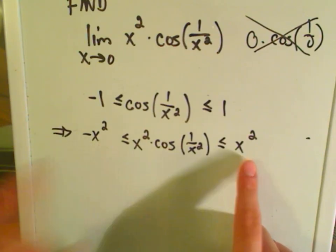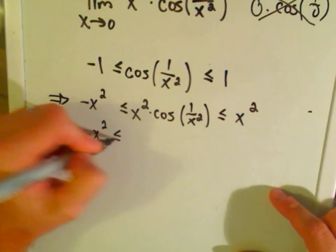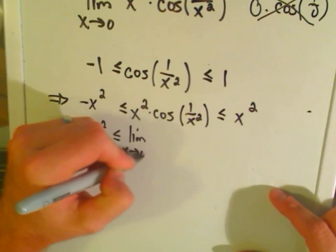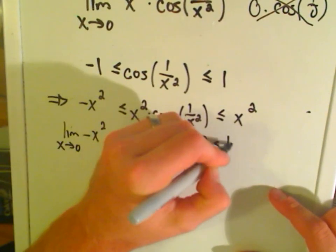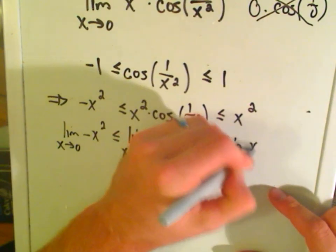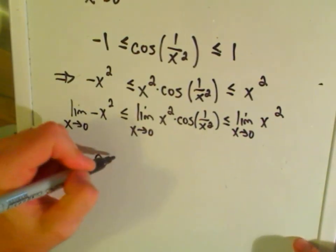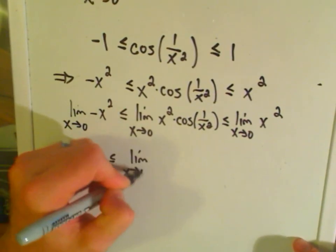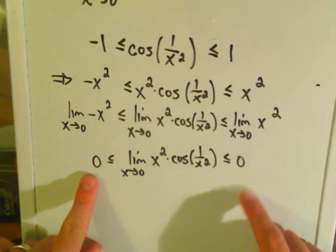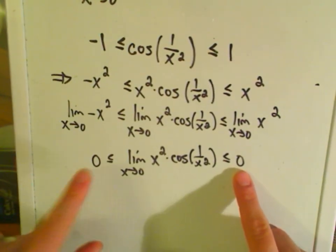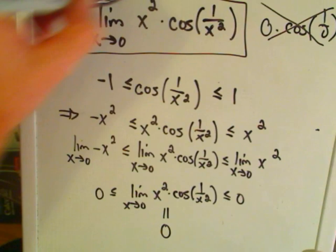Now we notice that the limit as x approaches 0 of −x² is less than or equal to the limit as x approaches 0 of x²·cos(1/x²), and that's less than or equal to the limit as x approaches 0 of x². We can just plug in x = 0 on the outside parts, and we get that the limit of x²·cos(1/x²) is greater than or equal to 0 and less than or equal to 0. So we can conclude this limit equals 0.